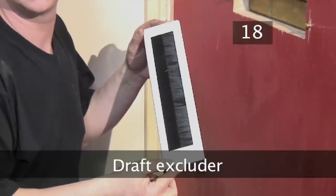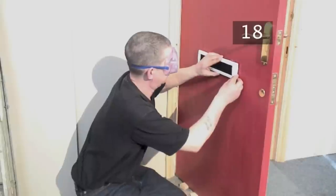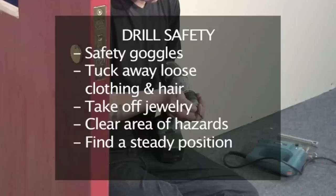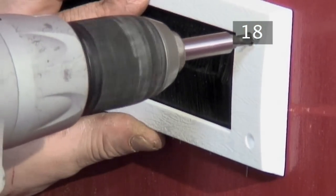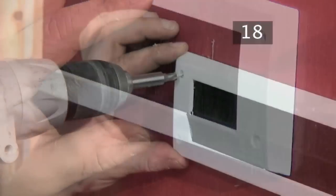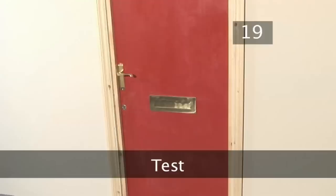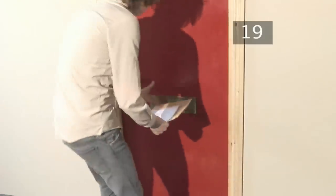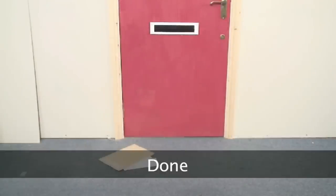Step 18. Draft excluder. The draft excluder will need to be attached to the inside of the door, like this. Remember your drill safety. Then drill the screws into position. Step 19. Test. Give the letterbox and draft excluder a test. Done.